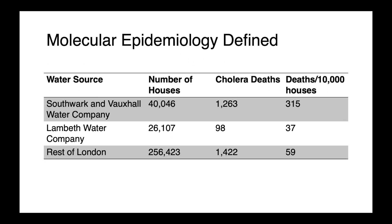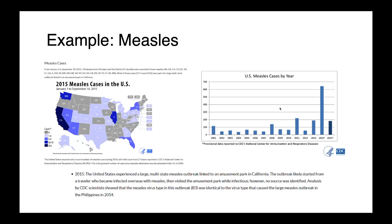Epidemiology goes all the way back to the 1800s. What John Snow eloquently demonstrates is the importance of identifying the source of a pathogen — even if you don't entirely understand what it is. If you control the source, you can control spread, and that's ultimately our goal. Molecular epidemiological techniques are now used in a wide variety of settings.